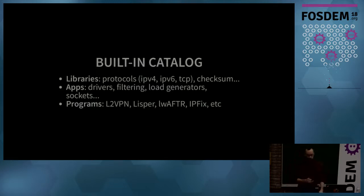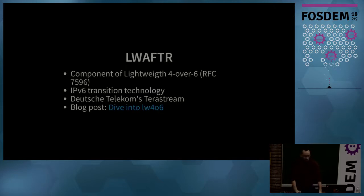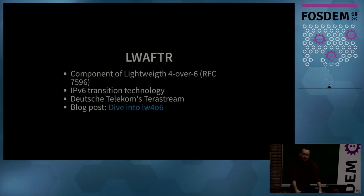SNAP already has full-fledged programs: L2 VPN, LISP, and a lightweight 4over6 network function. Lightweight 4over6 is part of a standard called Lightweight 4over6 — an architecture for deploying IPv6-only networks while still offering IPv4 connectivity and services. It was a project mostly funded by Deutsche Telekom because they are deploying this architecture in their next generation networks called TerraStream. I wrote a blog post about how Lightweight 4over6 works if you are interested.